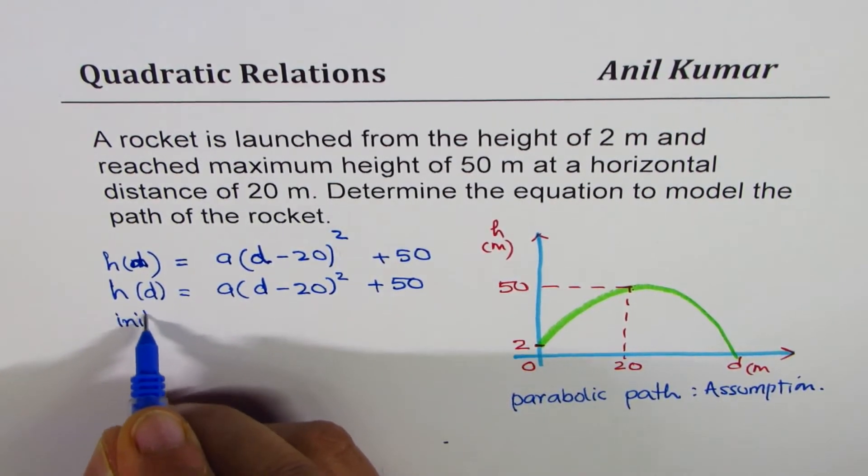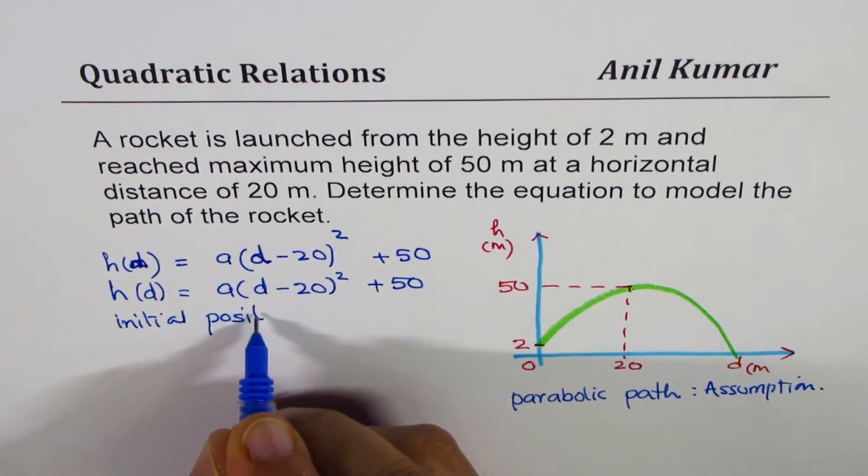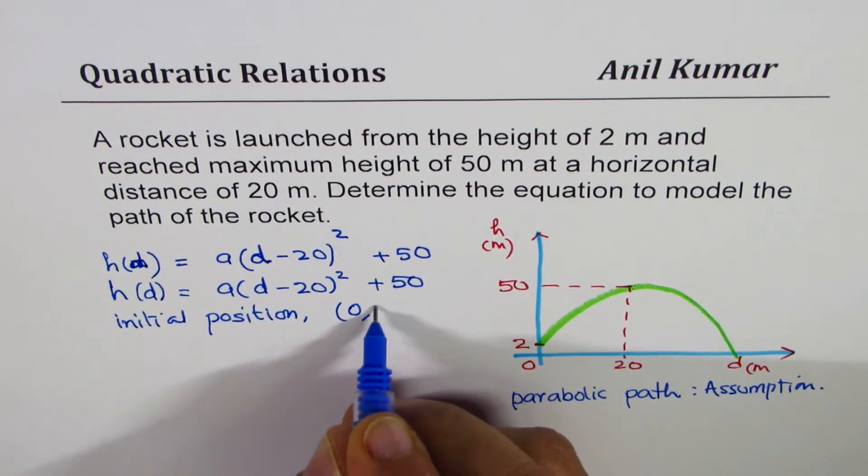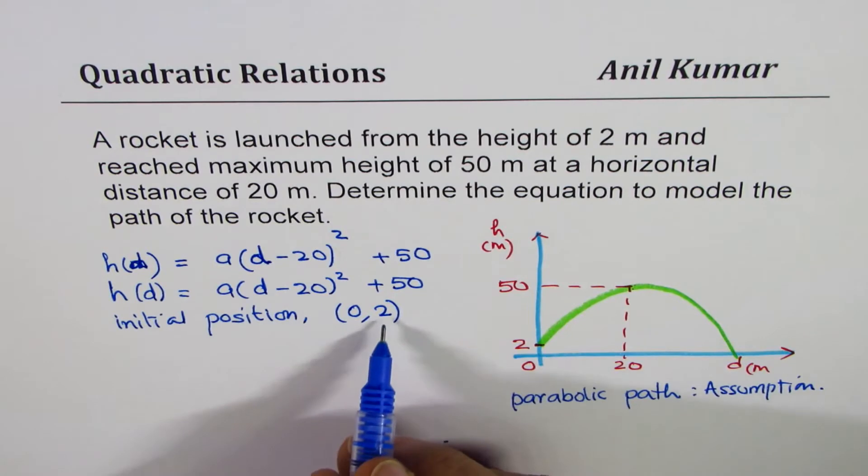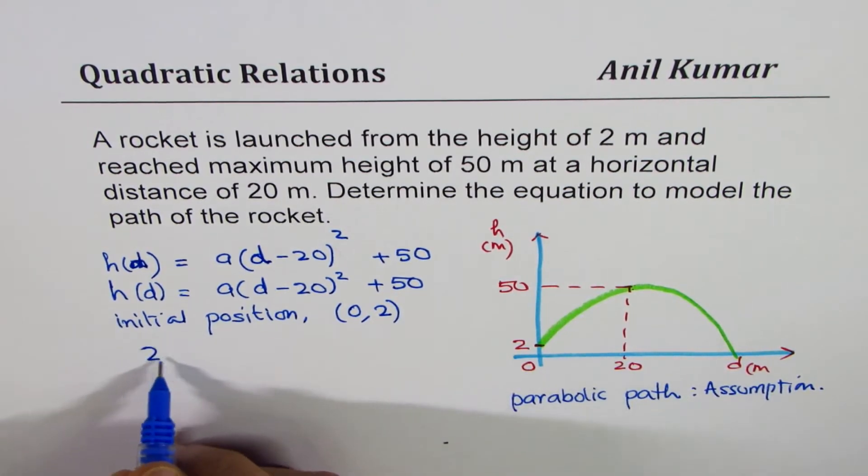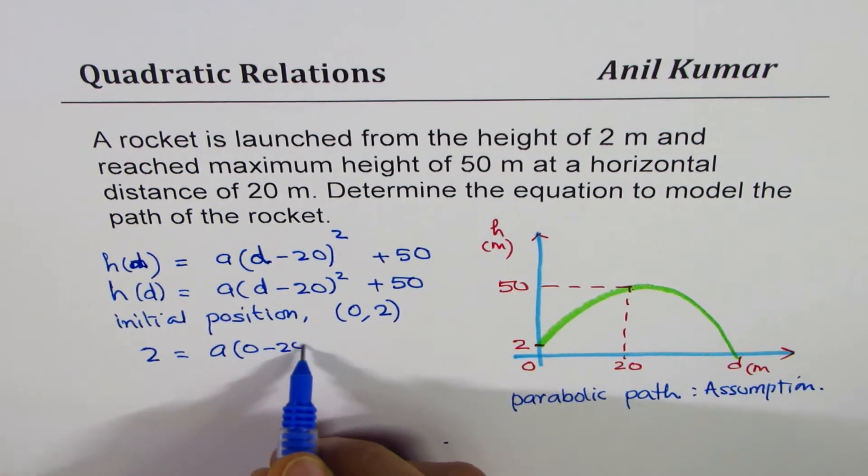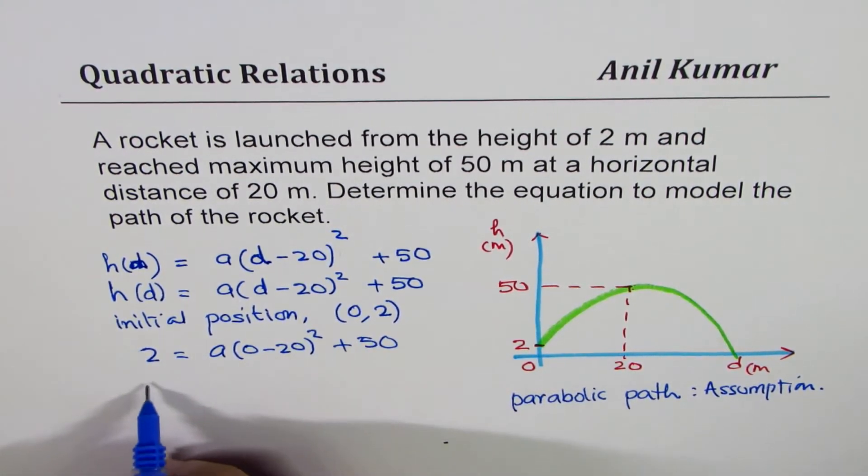The initial position is the launching point. When distance is 0, height is 2. So we can substitute this to find A. Height of 2 for distance of 0: A times 0 minus 20 whole square plus 50.